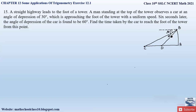Since angles of depression are involved, we apply the alternate angle property. There is a Z-formation, so the 30-degree angle at the horizontal is equal to the 30-degree angle at C because of the alternate angle property. Similarly, again a Z-formation means the 60-degree angle at B is equal to the 60-degree angle at D because of the alternate angle property.